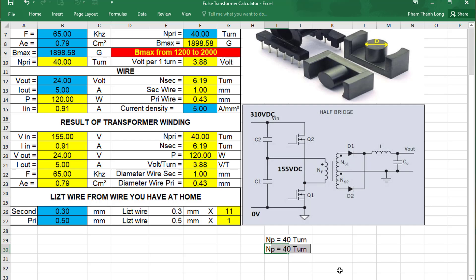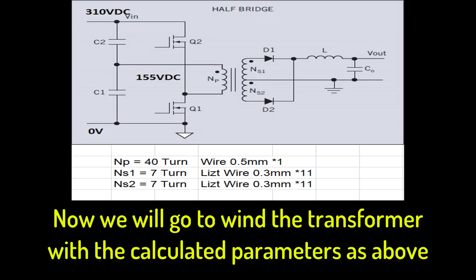Primary winding 40 turns, wire diameter 0.5 millimeters. Secondary winding 7 turns, parallel wire diameter 0.3 millimeters, 11 wires. Secondary I wound 7 turns because there will be voltage drop under load. Now we will go to wind the transformer with the calculated parameters as above.